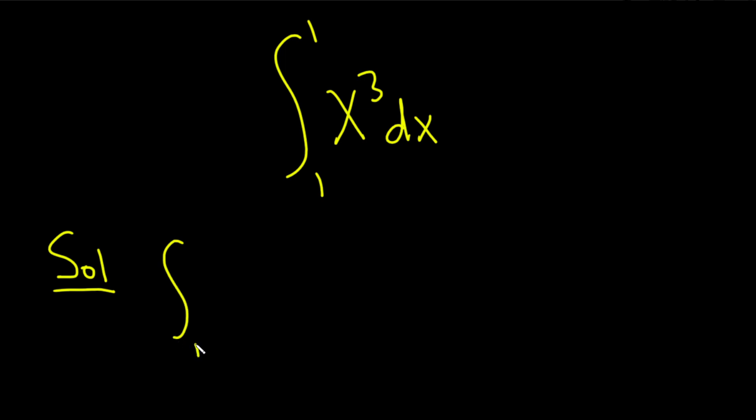So here we have from 1 to 1, x cubed dx. This is equal to, so first we add 1 so we get x to the 4 and we divide by the result so 4.